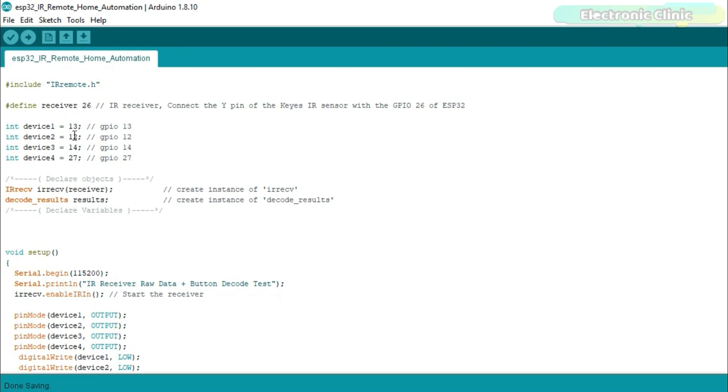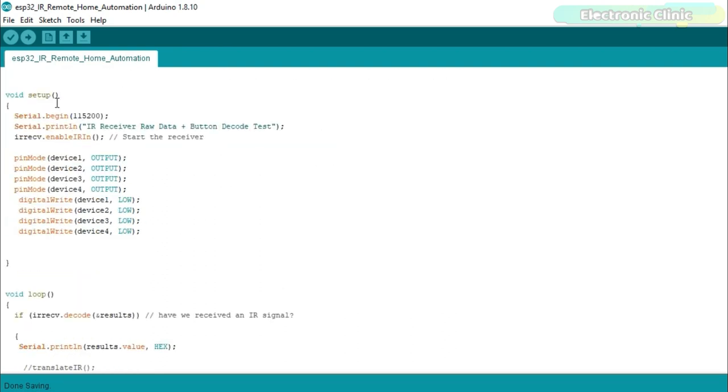The IR remote Y pin is connected with the GPIO 26 of the ESP32 module. Next, I defined four pins to which all the four relays are connected. Inside the setup function, I set the baud rate and set all the devices as the output.